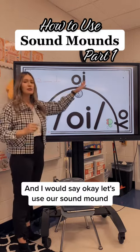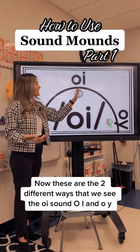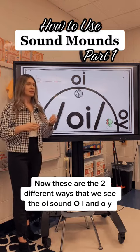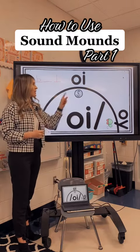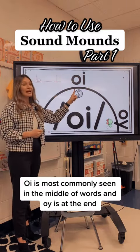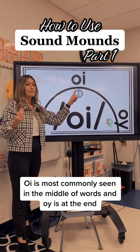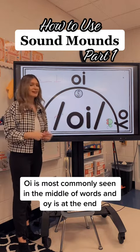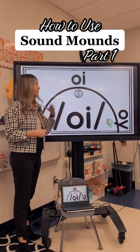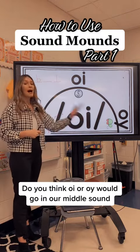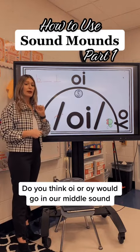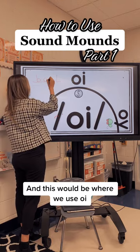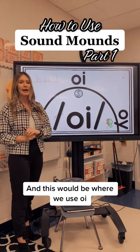Let's use our sound mounds now. These are the two different ways that we see the OI sound: OI and OY. OI is most commonly seen in the middle of words, and OY is at the end. Do you think OI or OY would go in our middle sound? This would be where we use OI.